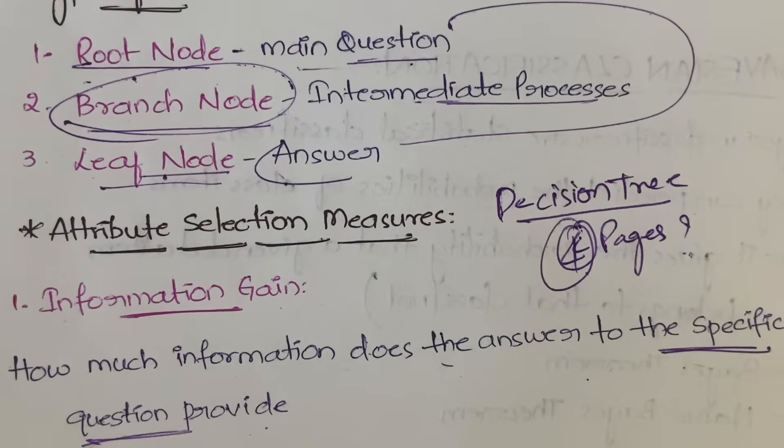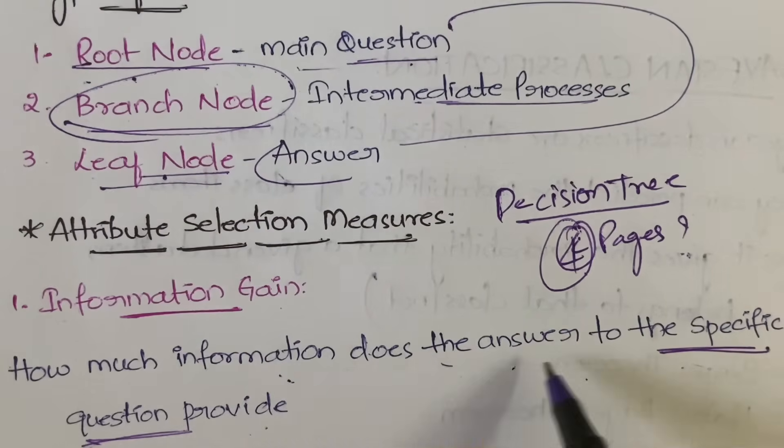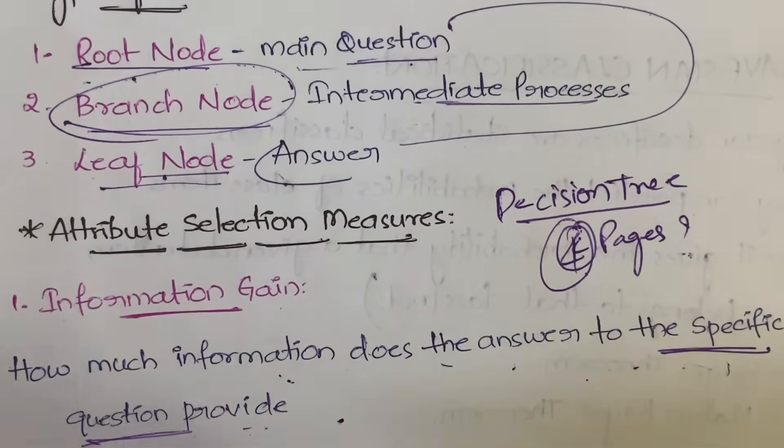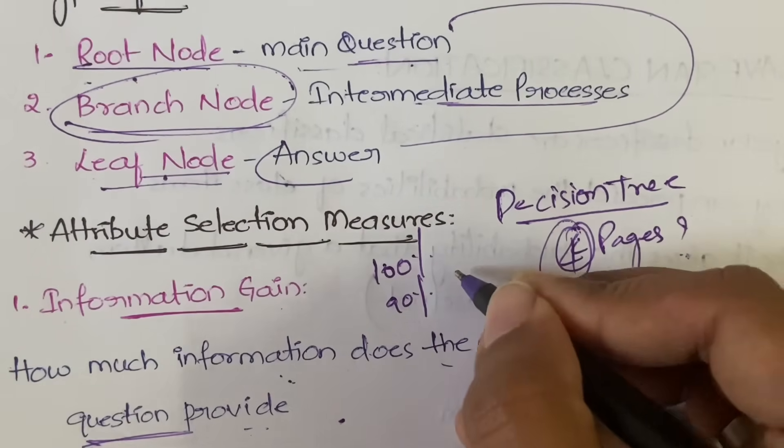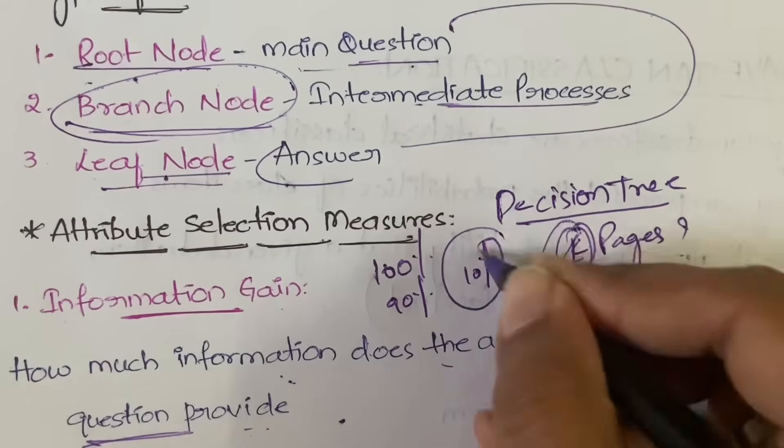So in those four pages what actually provides the correct answer to the question which is asked is important. That is what information gain is. How much information does the answer to the specific question provide? Does it provide complete hundred percent information or ninety percent information or just ten percent of the information?